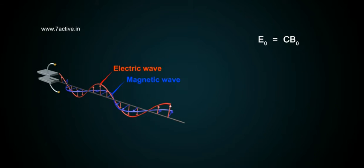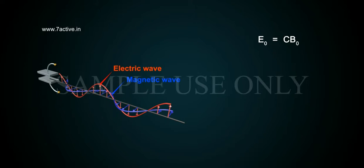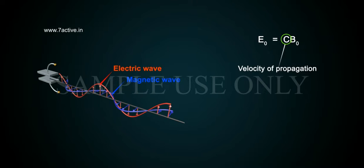E0 equals Cb0, where C is the velocity of propagation.